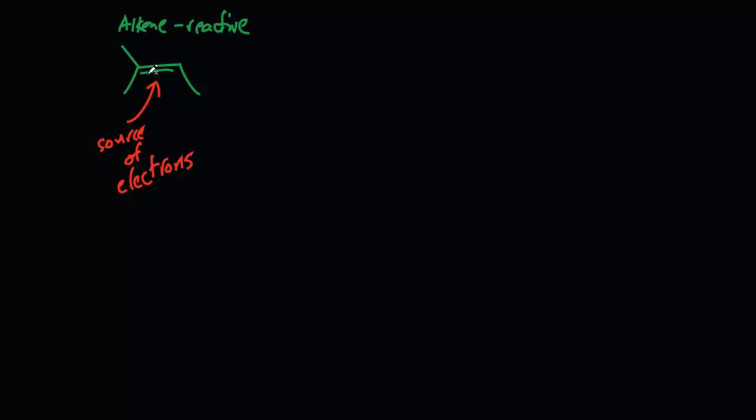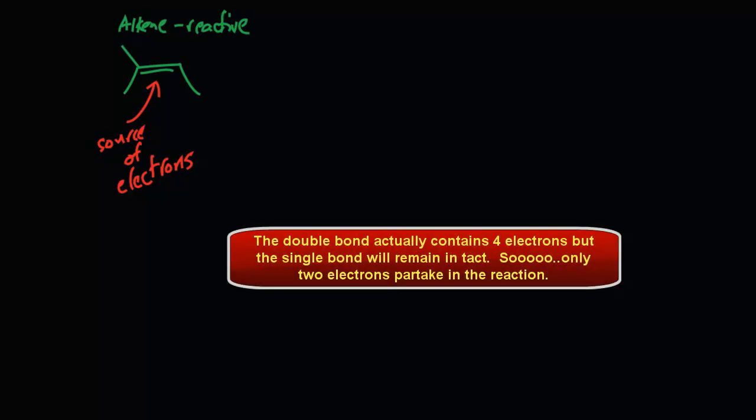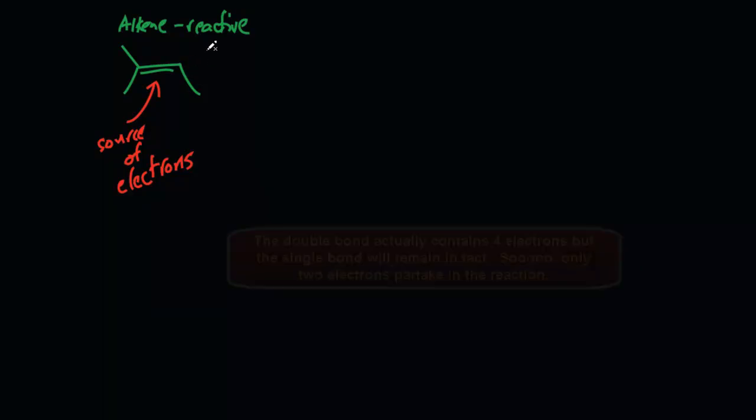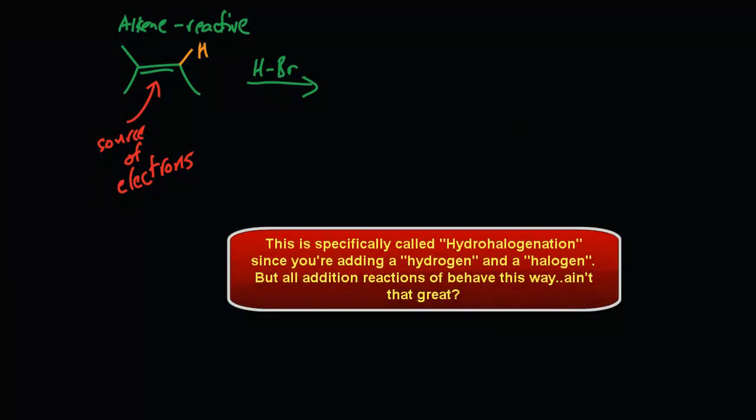Alkenes are pretty good candidates for a lot of different reactions because of the two electrons that occupy this additional double bond. Let's say I draw in the fact that there's an H here, which will become important in a minute, and I undergo an addition reaction with this alkene by adding HBr.